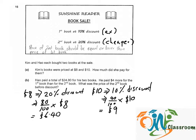So the total amount that Kim needs to pay is $6.40 plus $9, which equals $15.40.